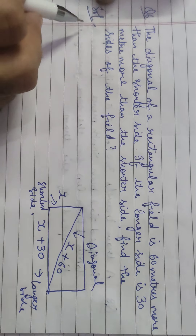Expanding: (X + 60)² = X² + (X + 30)². Left side: X² + 120X + 3600. Right side: X² + X² + 60X + 900 = 2X² + 60X + 900. So X² + 120X + 3600 = 2X² + 60X + 900.